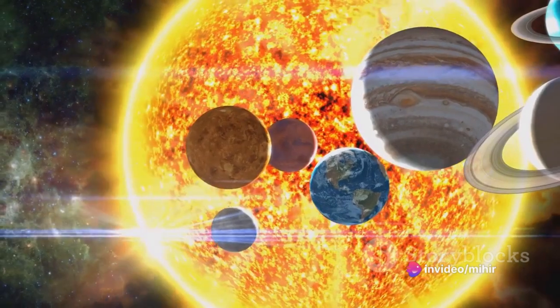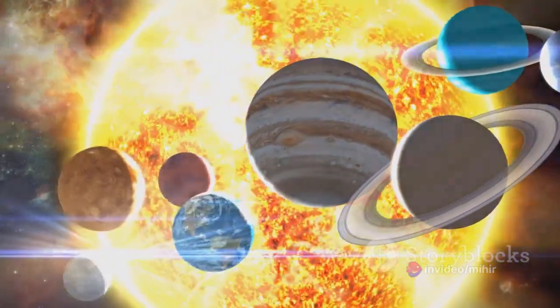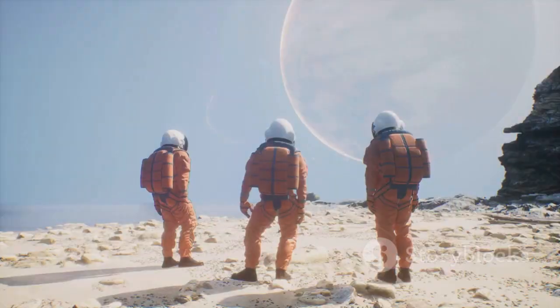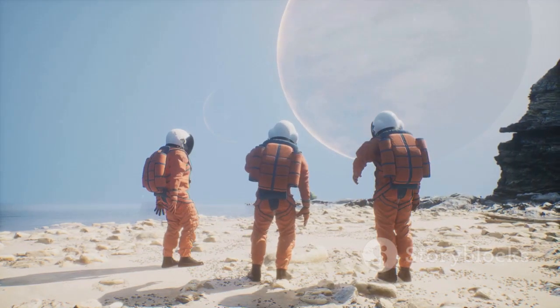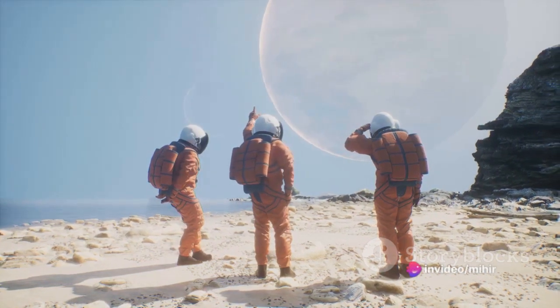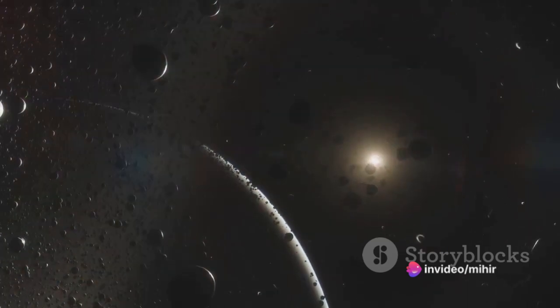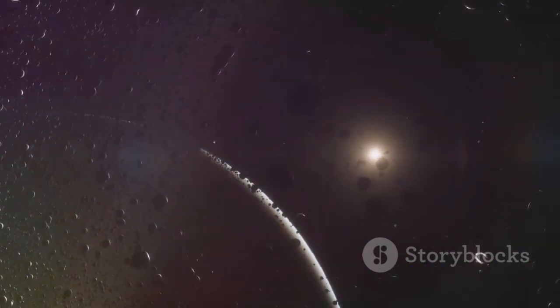Comprising of a life-giving star, eight diverse planets, moons, asteroids, and comets, our solar system is a testament to the universe's enigmatic beauty and diversity. Each celestial body, from the scorching Mercury to the icy Neptune, has its own story to tell - a story of formation, evolution, and existence in the cosmic dance around the sun.